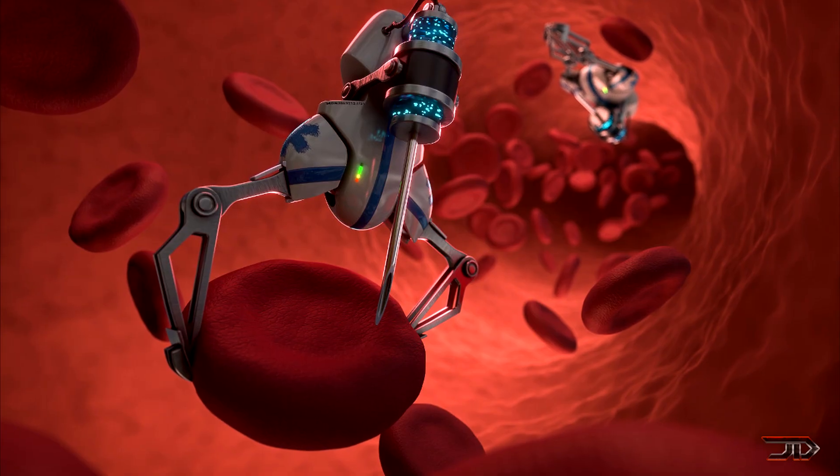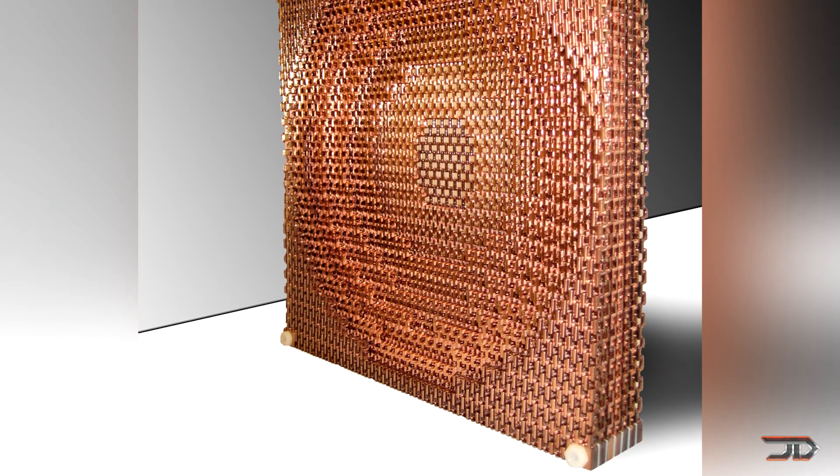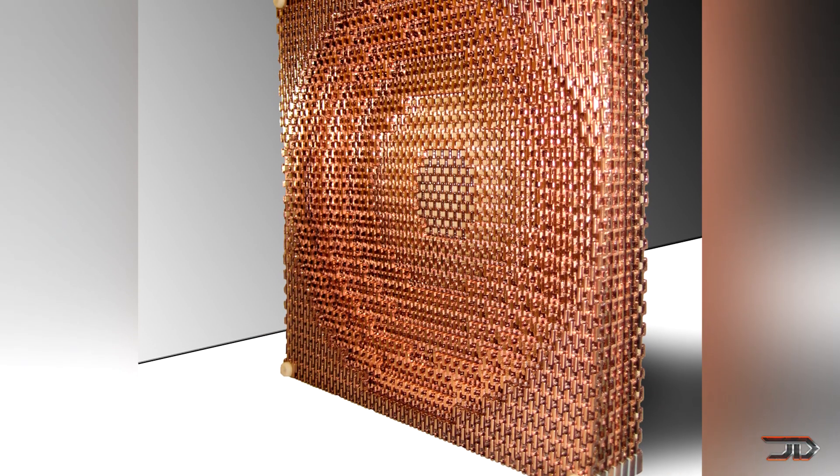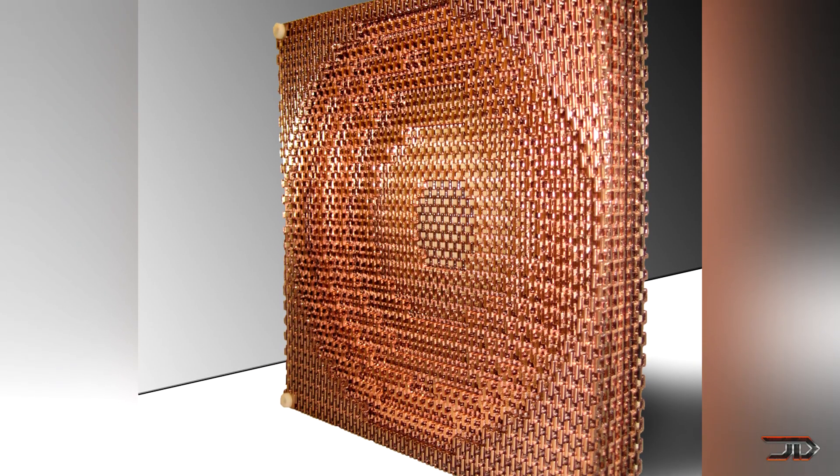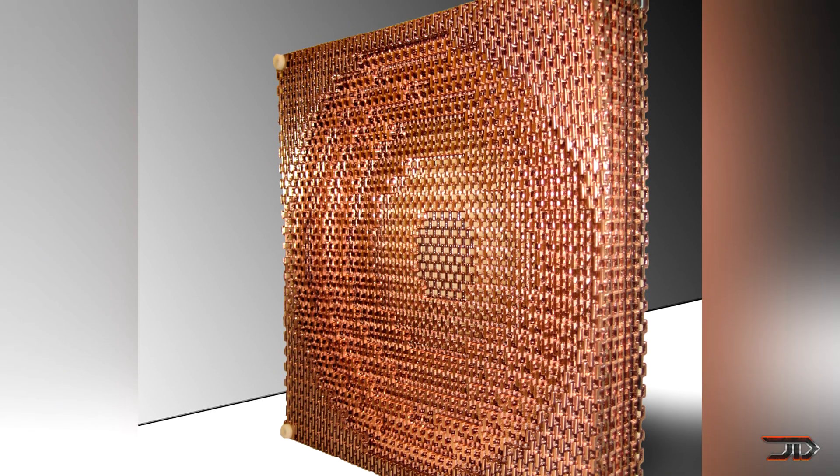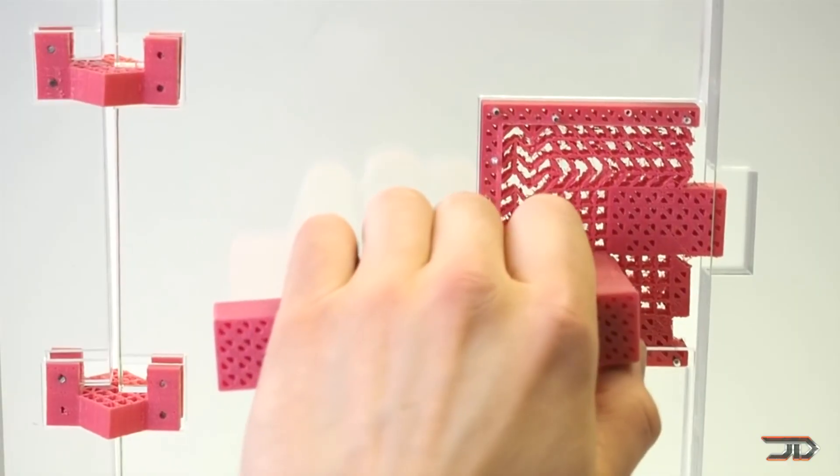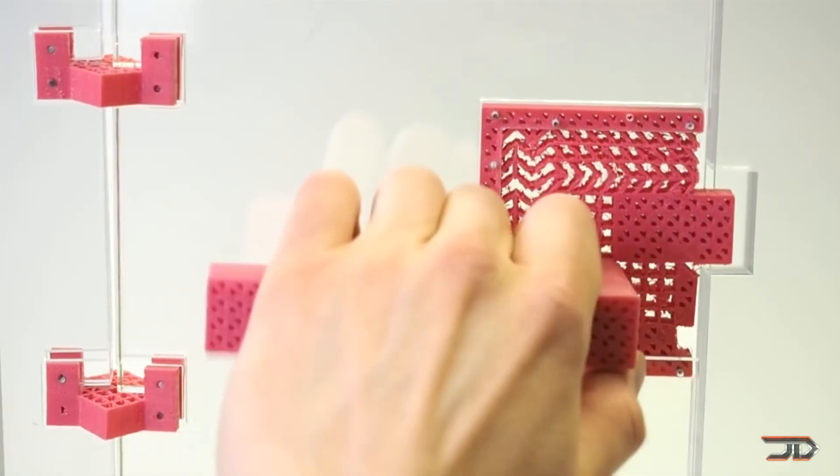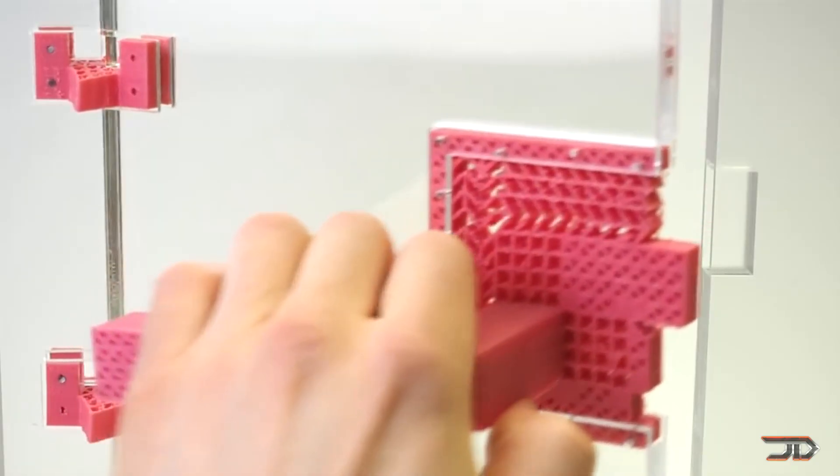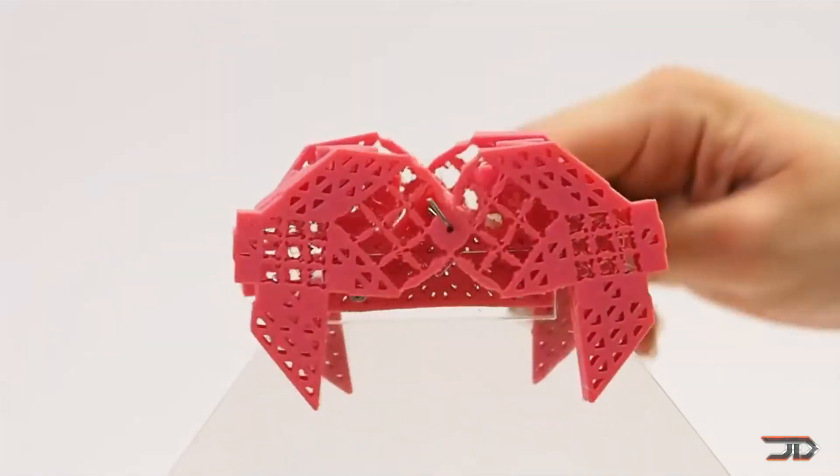But engineering things at a nanoscale can also lead to new developments in metamaterials. And they are not really machines, but they are more so materials which don't occur naturally. A few examples would include a cloaking device, or even a super lens which gets around the problems associated with wave decay. But the applications of metamaterials are basically endless.